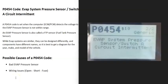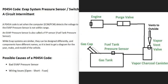Today I'm talking about a P0454 code — what it is and how you can go about fixing it. Vehicles have what's called an EVAP system that takes the gas vapors from the gas tank and feeds them back up to the engine to be burnt away so they don't escape into the atmosphere.